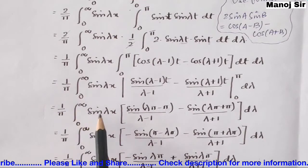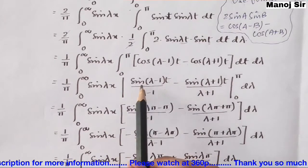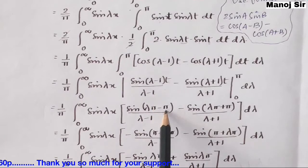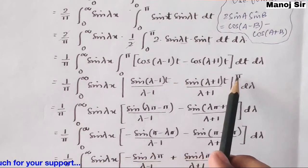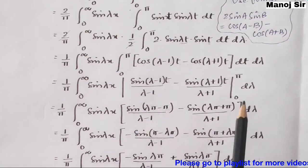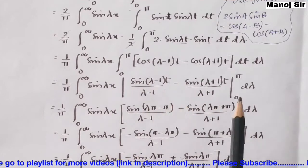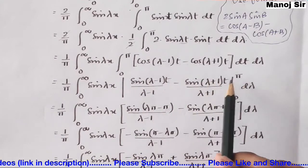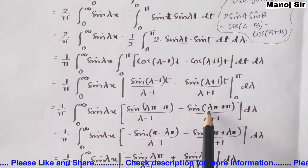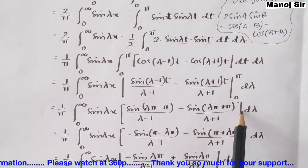Applying the upper limit π: the first term becomes sin(λπ − π) / (λ − 1). When the lower limit 0 is substituted, sin(0) = 0, so that part vanishes. The second term becomes sin(λπ + π) / (λ + 1).